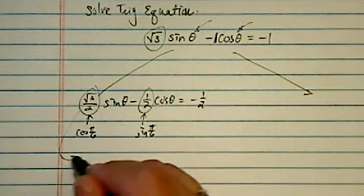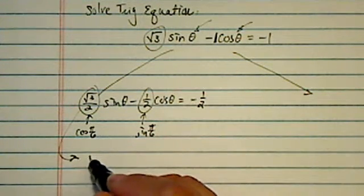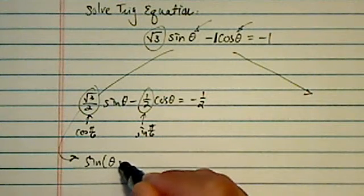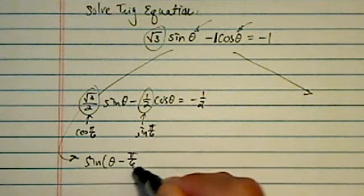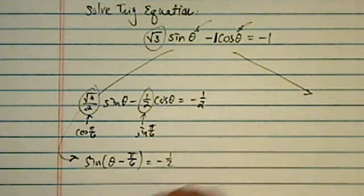Then you can convert this one into one equation in the form of sin(θ - π/6) equal to -½. You can solve from there.